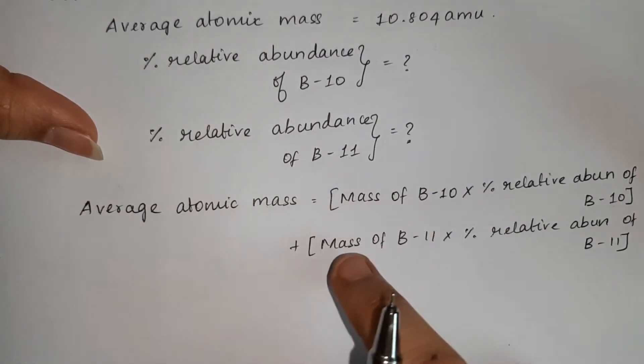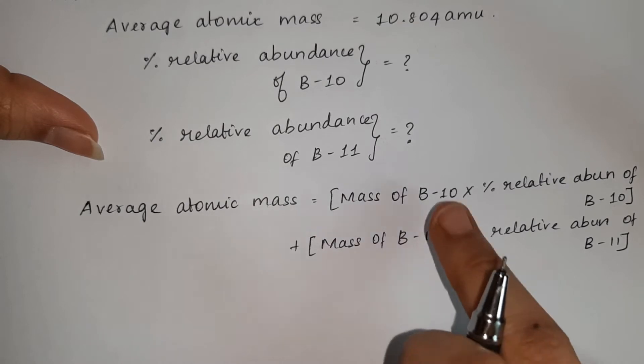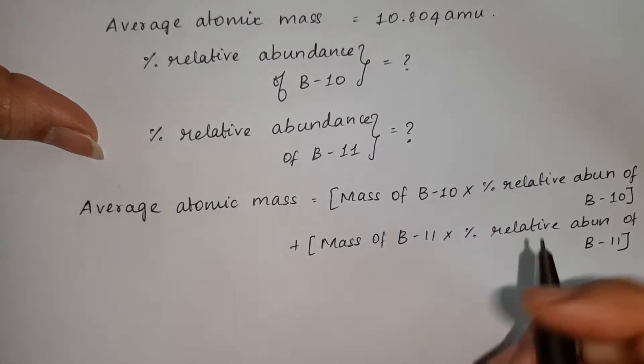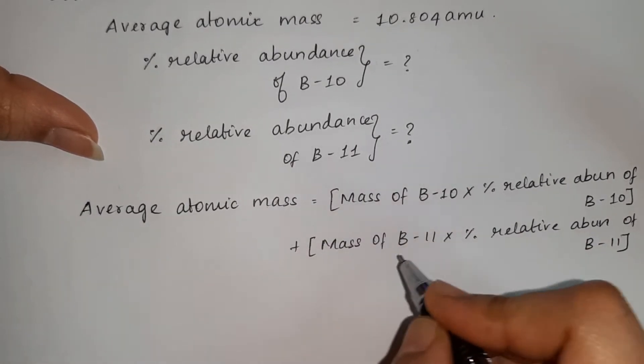The mass of Boron-10 and mass of Boron-11 values are used in this question: Boron-10 has mass 10 and Boron-11 has mass 11.